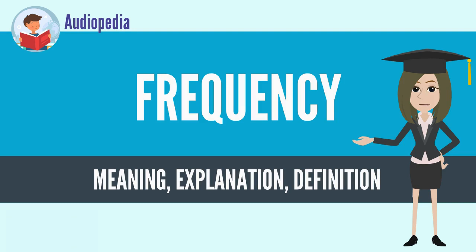For example, if a newborn baby's heart beats at a frequency of 120 times a minute, its period — the time interval between beats — is half a second, that is, 60 seconds divided by 120 beats.